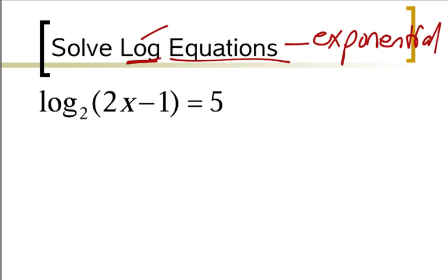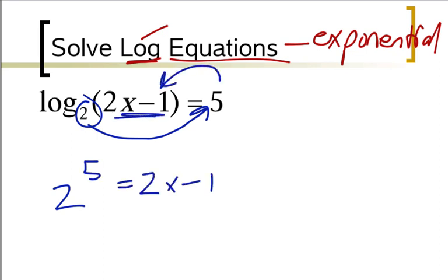We do that by the circle pattern, where we start with a 2, raise it to the 5th power, and set it equal to what's left over, which is 2x minus 1. As soon as I do this, the problem gets a lot better.